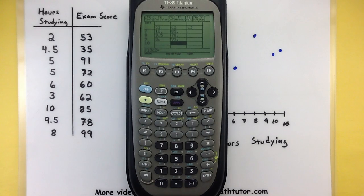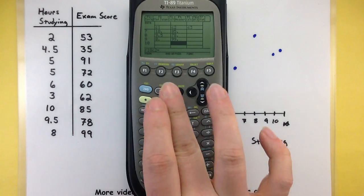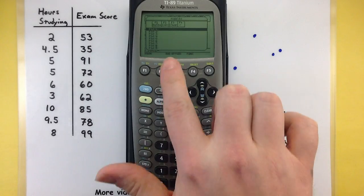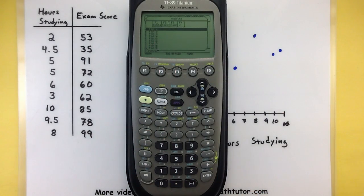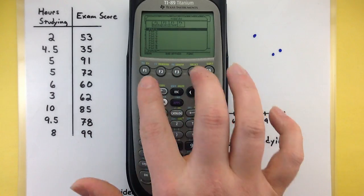Okay so now that the data is actually in the calculator we need to get our plots set up so that it displays correctly. Up top here you'll notice under F2 it says plot setup. Go ahead and press your F2 button so we can get in there. It's got a lot of plot options. None of them are set right now so we'll press F1 to define a new plot.